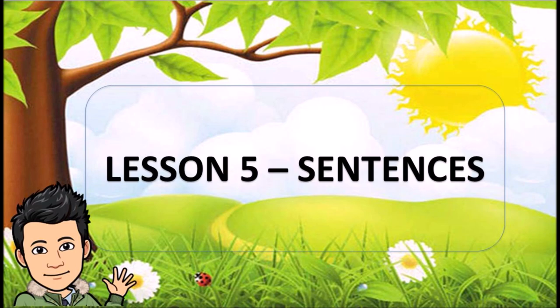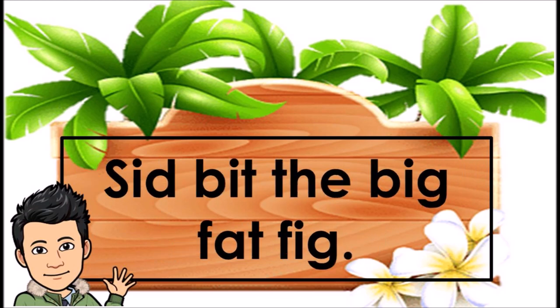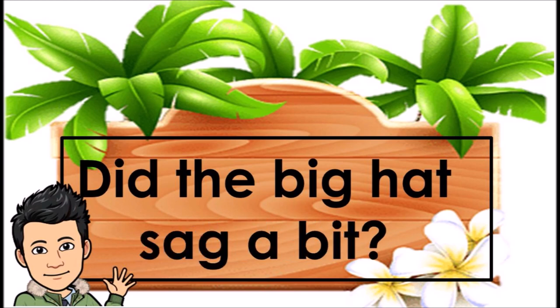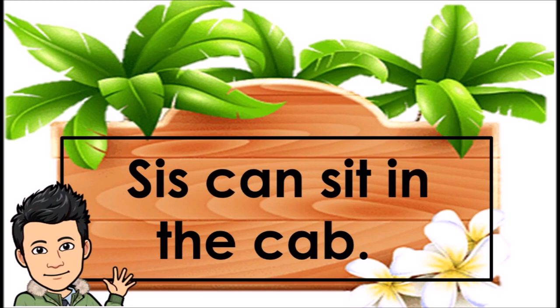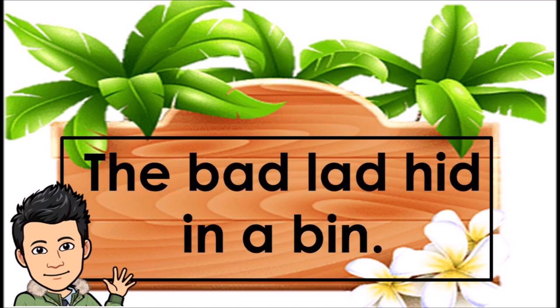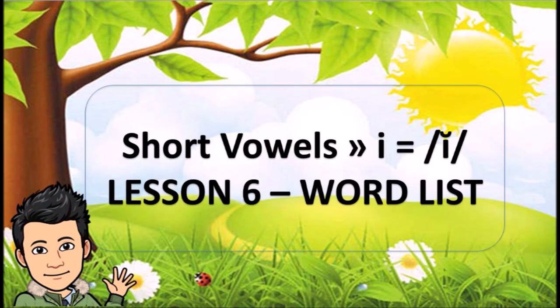Lesson 5. Sentences: Cis had jam. Cid had a fig. Cid bit the big fat fig. Did the big hat fit Hal? Did the big hat sag a bit? Cis can sit in the cab. The cab hit a big dip. The bad lad hit in a bin. If Cid can bat, Cid can hit it. Short vowels: I equals I.